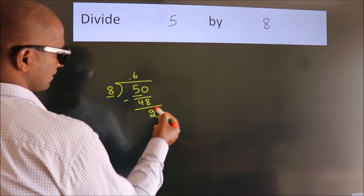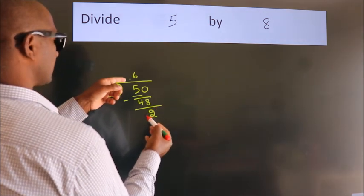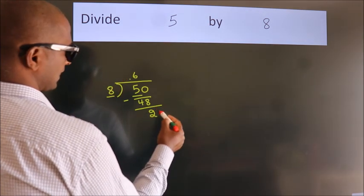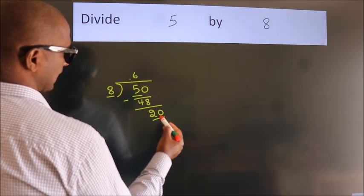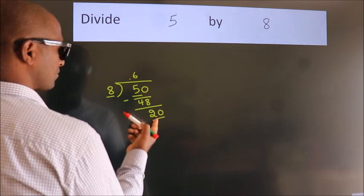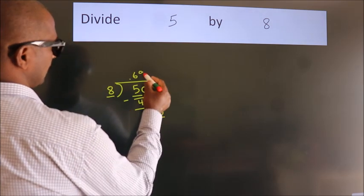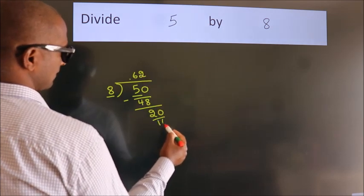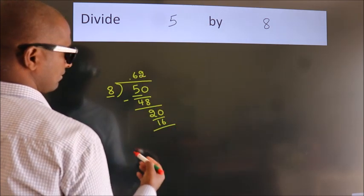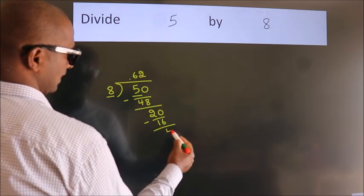After this, we already have the decimal, so directly take 0. So 20. A number close to 20 in the 8 table is 8 times 2, which is 16. Now we subtract. We get 4.